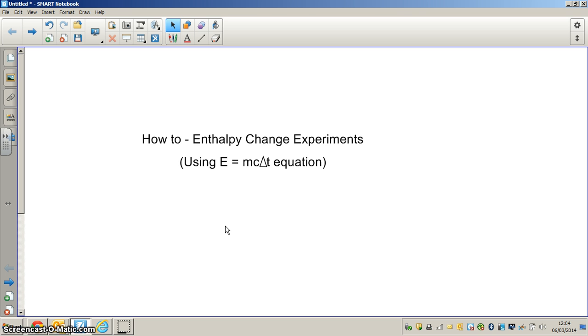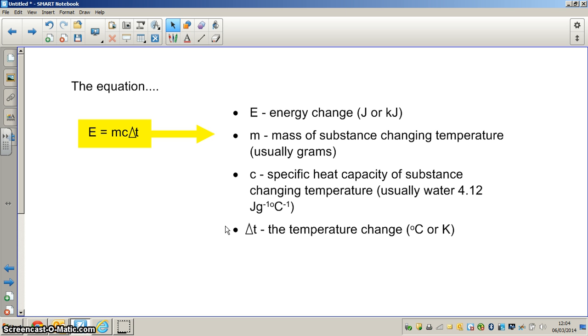Let's quickly look at the equation and what the letters mean. E equals MC delta T. E refers to energy change in the chemical reaction which takes place and it's normally measured in joules or kilojoules. M stands for mass, and it's the mass of the substance that changes temperature. We need to be very careful here because often students get confused between the mass of the fuel used and the mass of the substance which is actually changing temperature by the burning or combustion of the fuel.